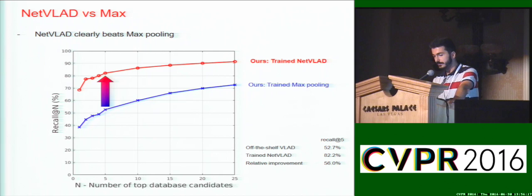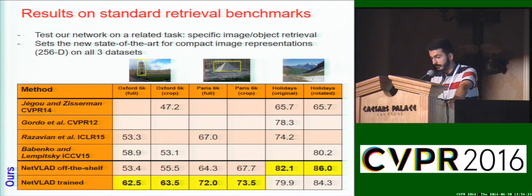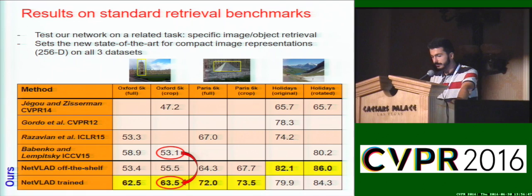Finally, we test our network on a related task of specific image retrieval, using three standard benchmarks: Oxford Buildings, Paris Buildings, and Holidays. We set the new state-of-the-art for compact image representations on all three benchmarks. For example, on Oxford Buildings we get an improvement from 53% to 63%, which is a very large gain on this benchmark.